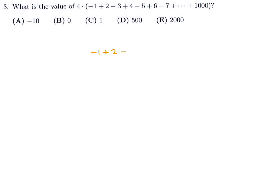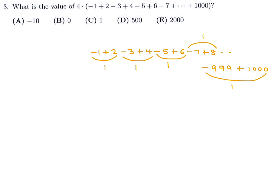Inside the brackets: negative 1 plus 2, negative 3 plus 4, negative 5 plus 6, negative 7 plus 8, and so on, all the way until minus 999 plus 1,000. Each of these pairs equals just 1. There are 1,000 numbers, so there are 500 pairs, giving us 500 ones, which add up to 500.